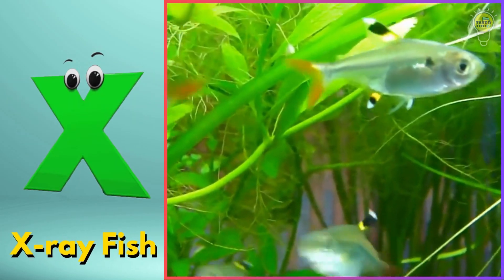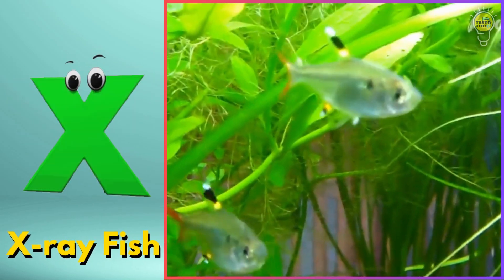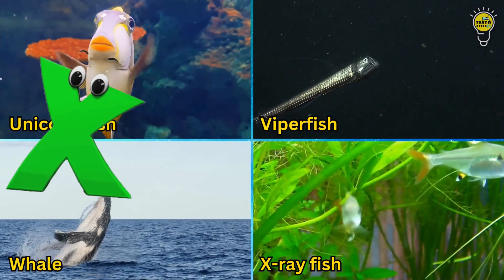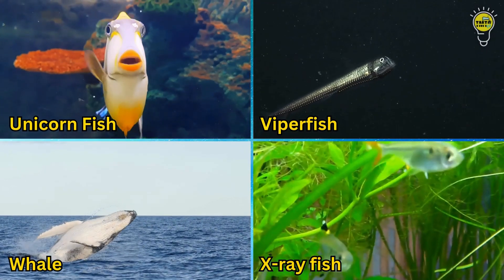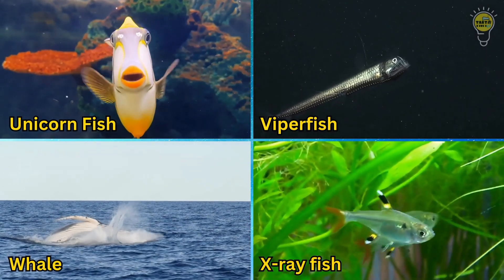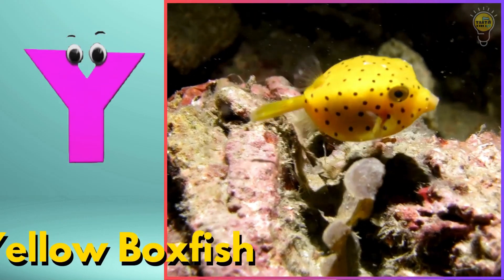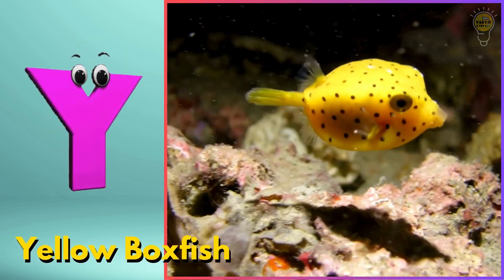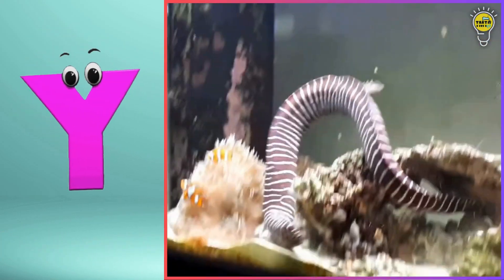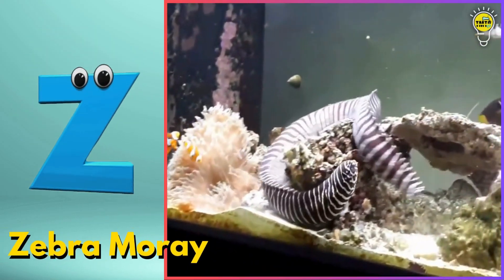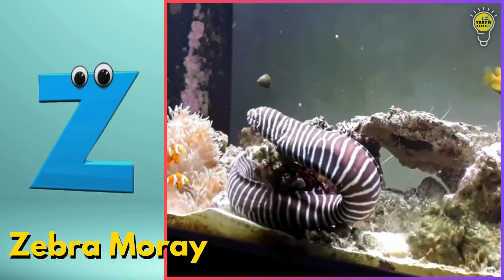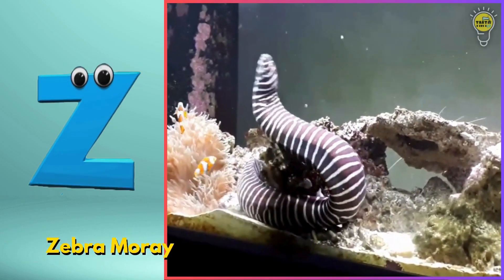X is for x-ray fish. Zuh, zuh, x-ray fish. Y is for yellow boxfish. Yuh, yuh, yellow boxfish. Z is for zebra moray. Zuh, zuh, zebra moray.